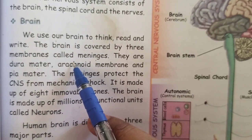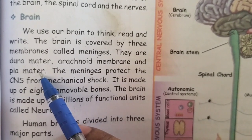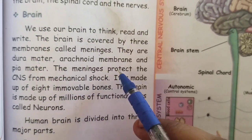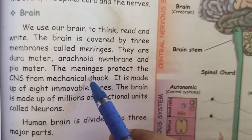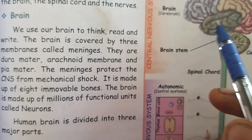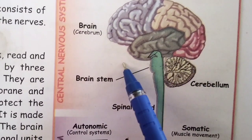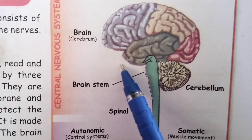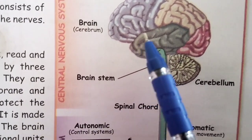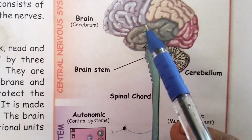The duramater is the outer layer, arachnoid is the middle layer and piamater is the inner layer of the meninges. The meninges protect the brain from shock. Our human brain is kept inside a bone box in the head region called the skull. The skull protects the brain from head injuries.